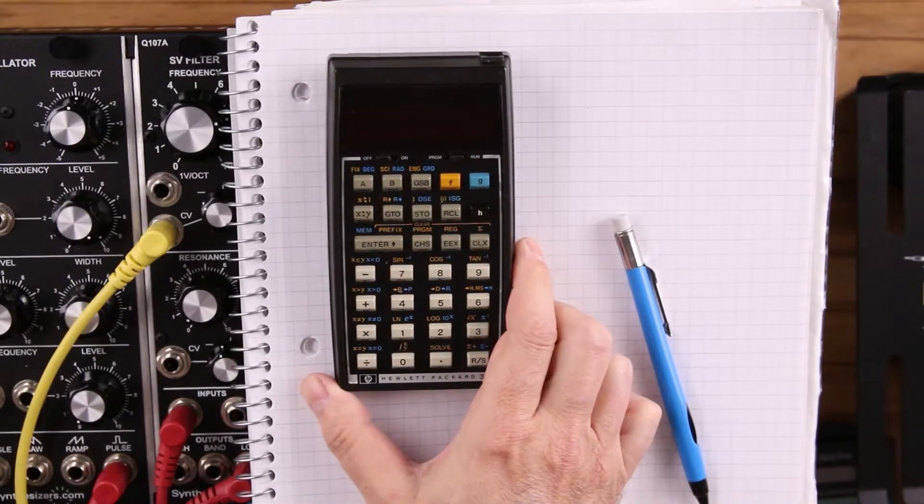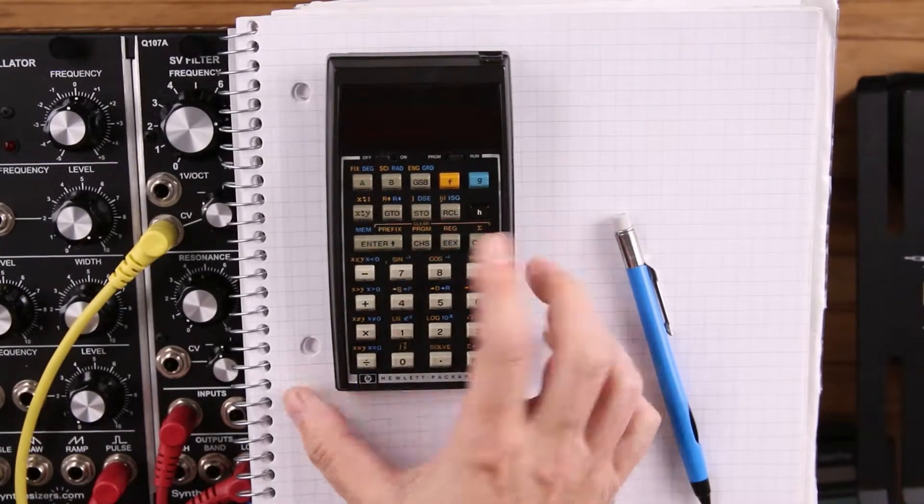Okay, here's an HP 34C calculator. This one was made back in around 1982.